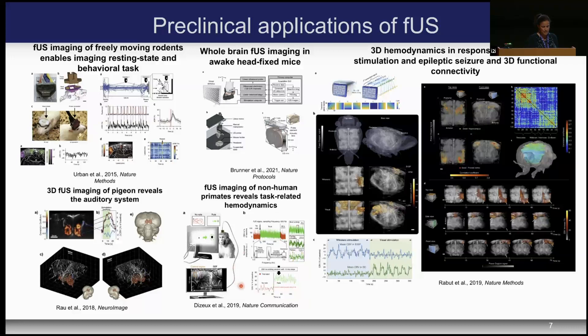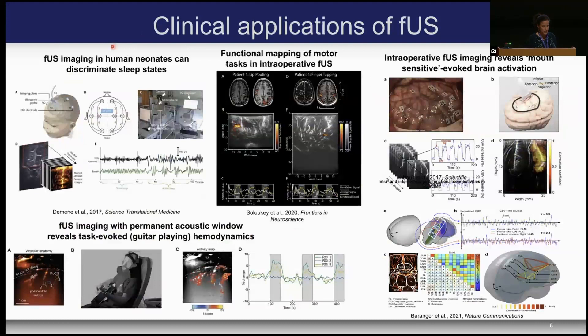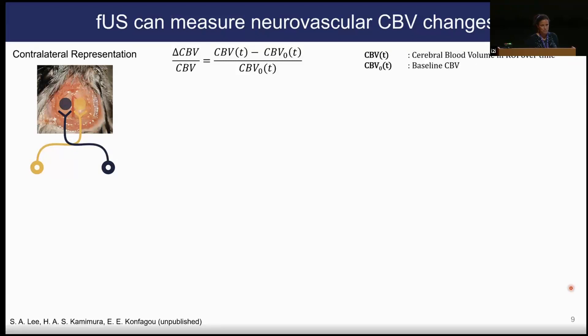There's also non-human primate work with task-related hemodynamics in working primates, and clinically in human neonates looking at sleep states, and in adults with a permanent acoustic window — for example, revealing task-evoked guitar-playing hemodynamics. Intraoperatively, it's being used to look at motor tasks and mouth-sensitive evoked brain activation. I'm going to show you some of what we do in my lab — a lot of it is unpublished, but I'm going to share it with you.